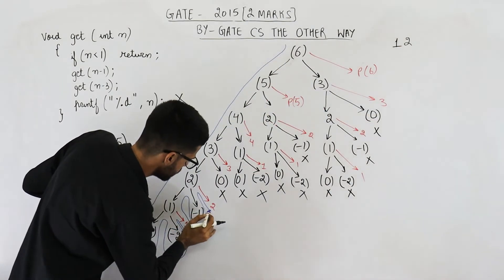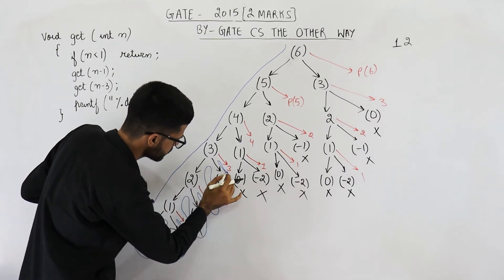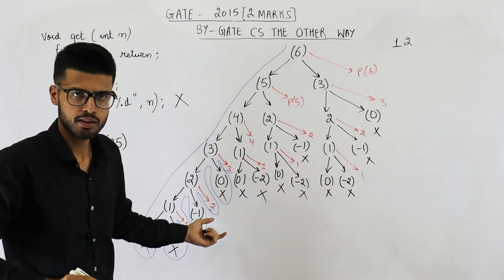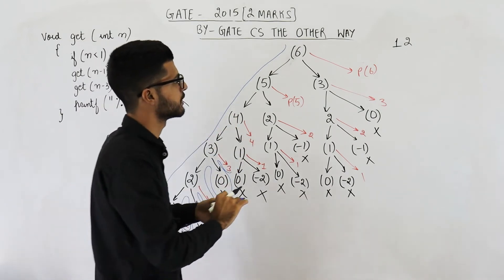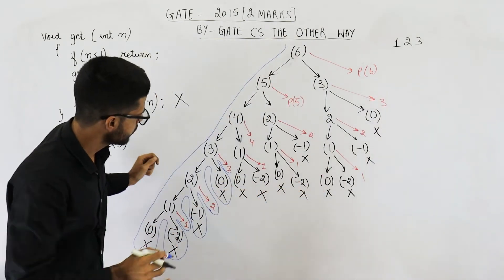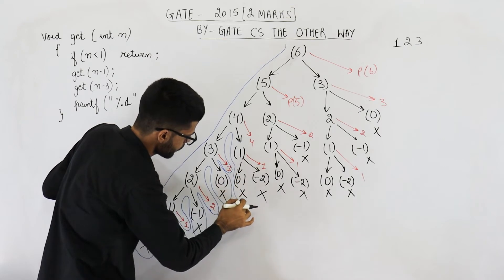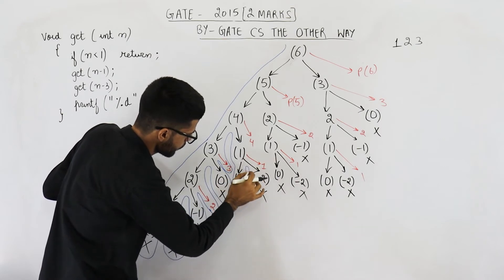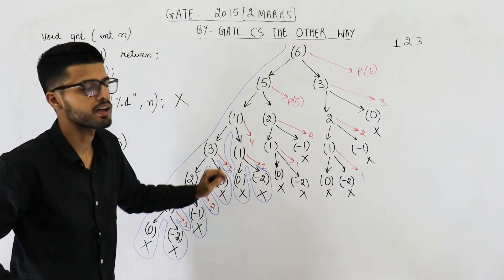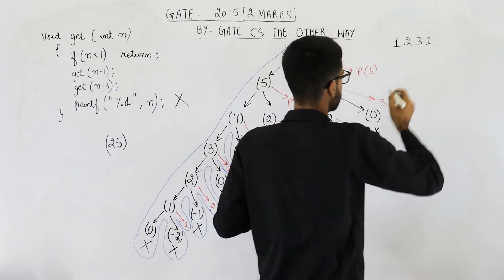After that, keep on continuing the same process. We have encountered one more print — whatever is written in red is a print statement. So 3 is going to be printed. Then we encounter one more print that is 1. So 1 is printed.